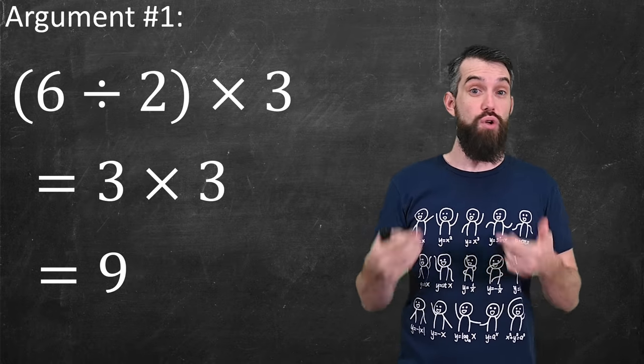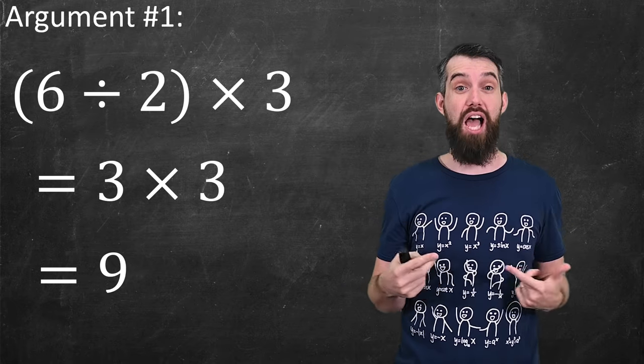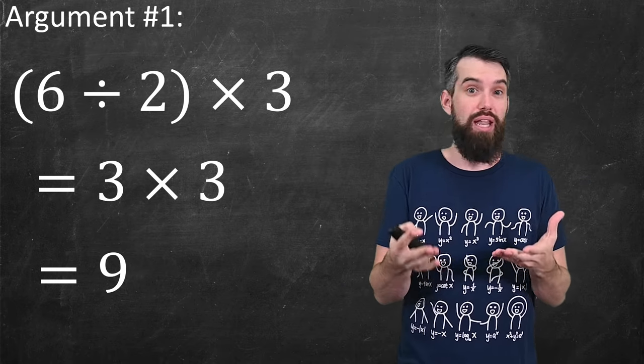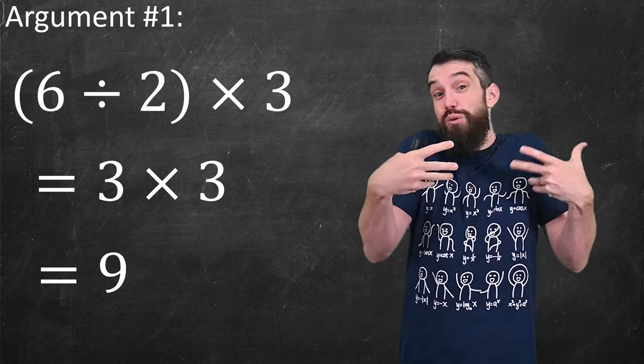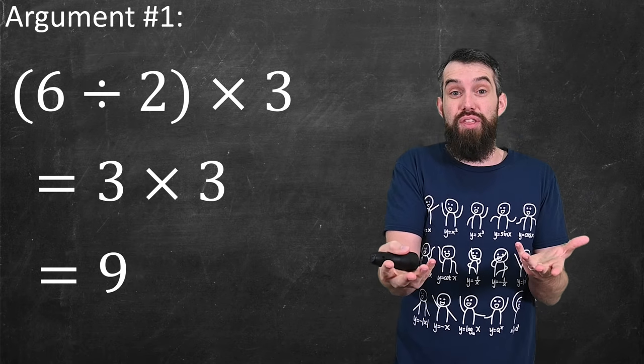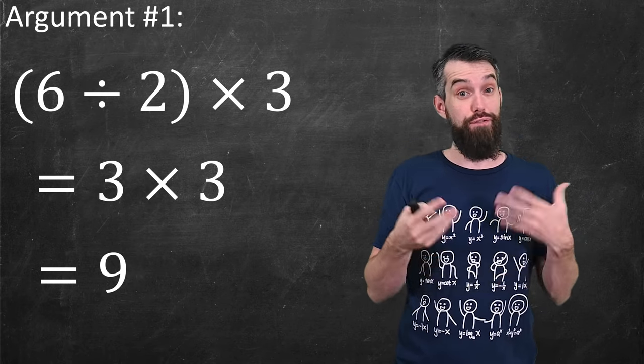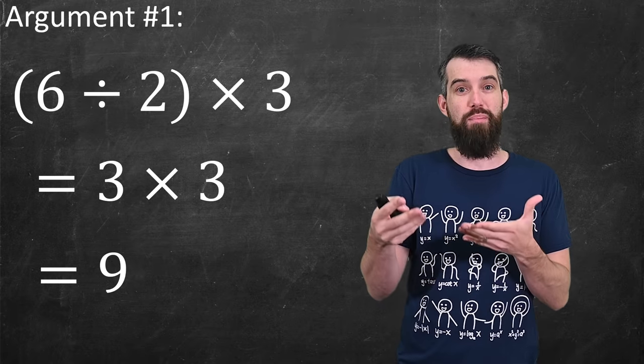Proponents of this argument say that you go from left to right any time you have things at the same basic level, like in this case division and multiplication. So even if you didn't have brackets here, you would be doing the 6 divided by 2 first because it's on the left, and then you'd be multiplying by the 3.